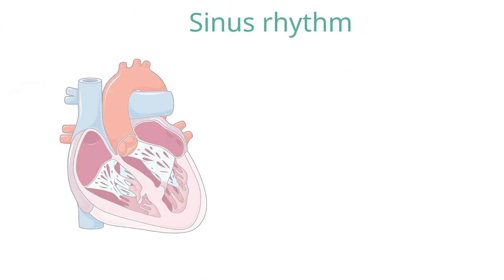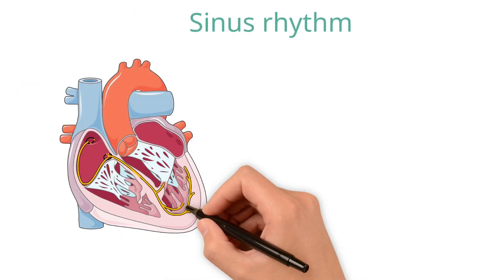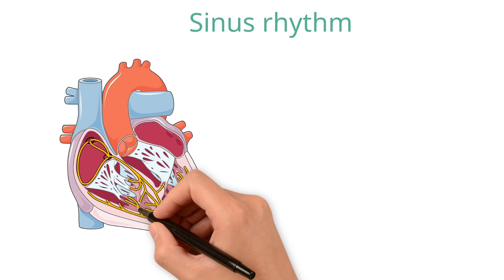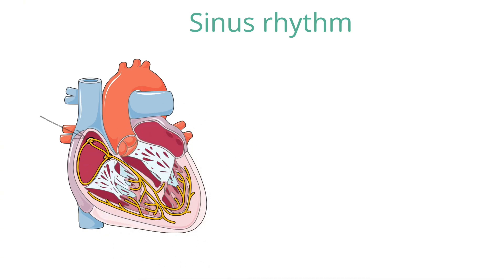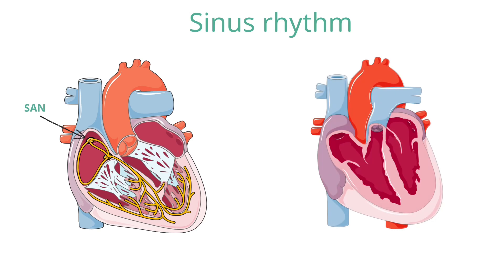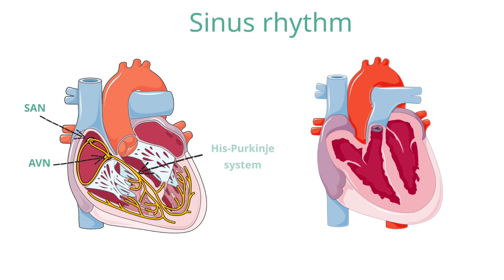In normal sinus rhythm, an electrical impulse is generated by the sinoatrial node, which is located in the wall of the right atrium at the junction with the superior vena cava. This impulse spreads across both atria, causing them to contract and push blood into the ventricles. Once the impulse reaches the atrioventricular node, it creates a delay to allow the atria to finish contracting, before transmitting the impulse onwards to the ventricles via the HIS-Purkinje system.